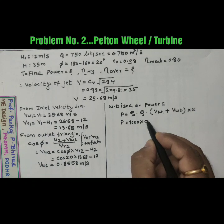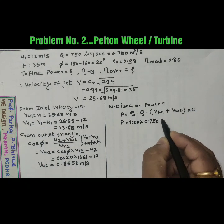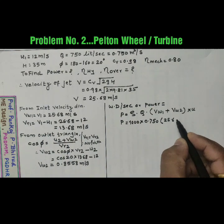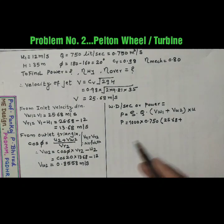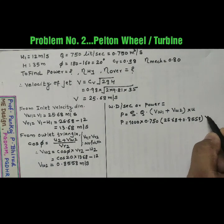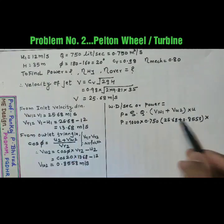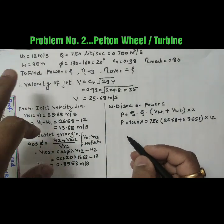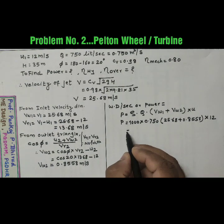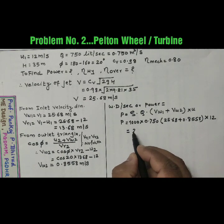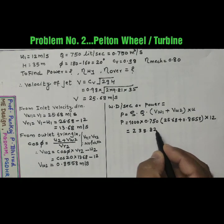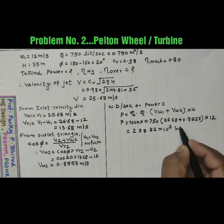Vw1 is 25.68 plus Vw2 is 0.8558 into U is 12. Now this U1 equal to U2 is equal to U. So by calculating we will get it 238.82 into 10 raised to 3 Watt.